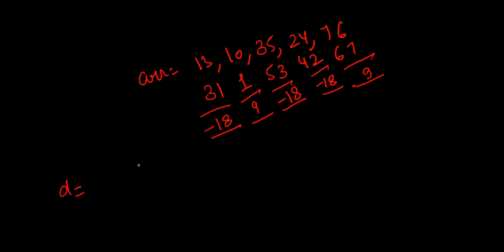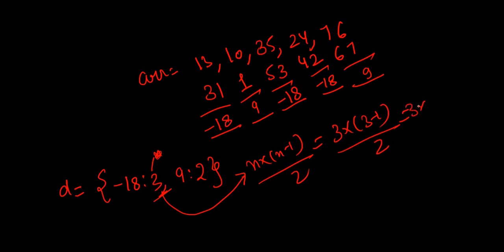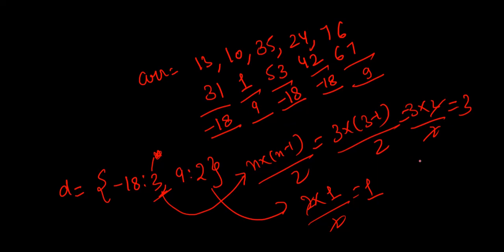After iterating and storing values in the dictionary: {-18: 3, 9: 2}. Using the formula n*(n-1)/2: for -18 with count 3, we get 3*2/2 = 3 pairs; for 9 with count 2, we get 2*1/2 = 1 pair. So overall we have 3 + 1 = 4 nice pairs. This completes the logic — now let's implement it.